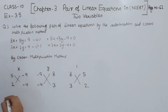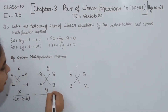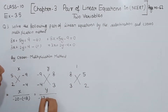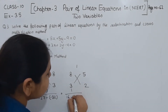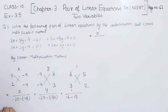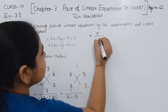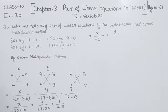Cross multiplying for x: 5 times (minus 4) is minus 20, minus (minus 9) times 2 is plus 18. For y: (minus 9) times 3 is minus 27, minus 8 times (minus 4) is plus 32. For the constant: 8 times 2 is 16, minus 5 times 3 is 15. So x over (minus 20 plus 18), y over (minus 27 plus 32), equals 1 over (16 minus 15), giving x over minus 2, y over 5, equals 1.